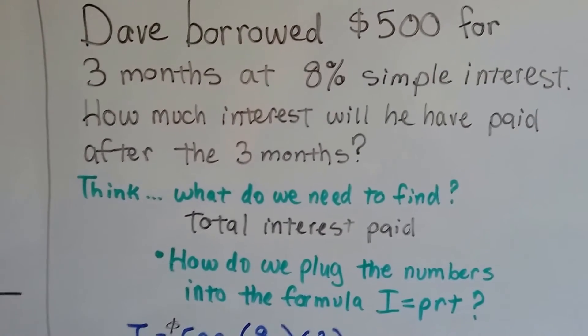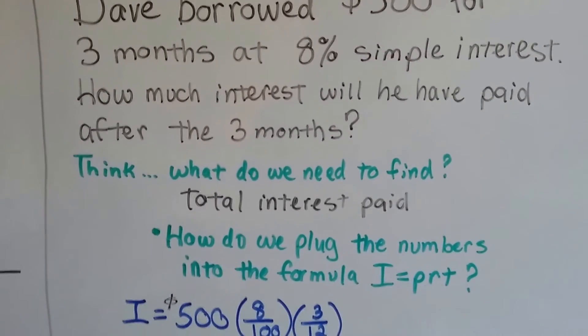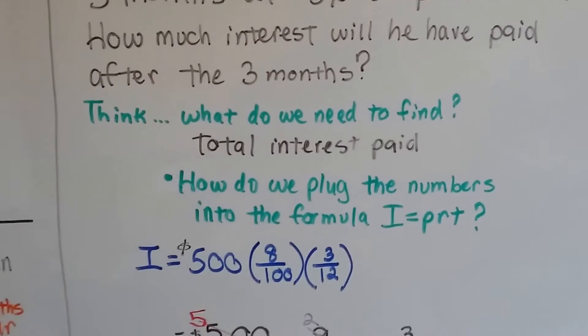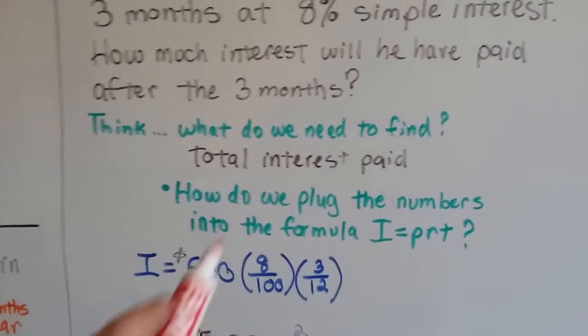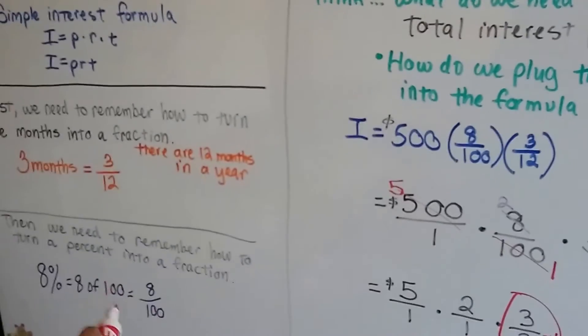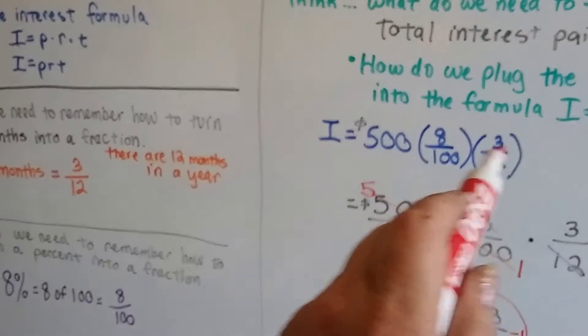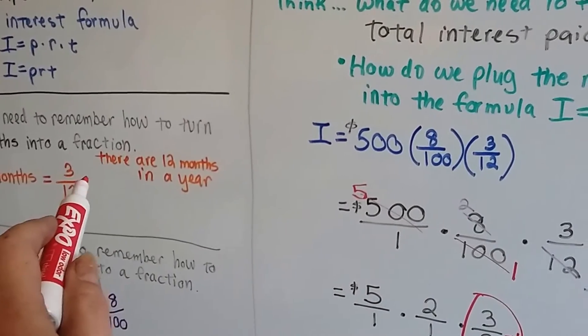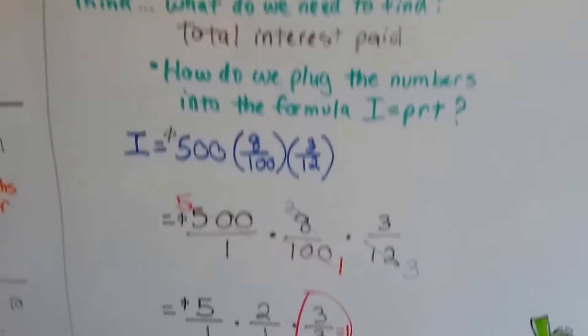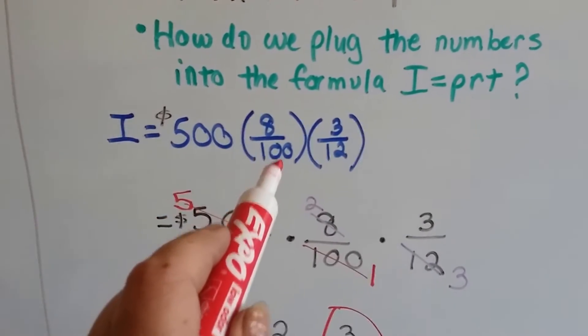We need to think: what do they want us to find? The total interest paid. Now how do we plug the numbers into the formula I equals PRT? Here's the principal amount, the five hundred dollars. Eight over one hundred is our percentage rate, and the three twelfths is the three months that we converted into a fraction.